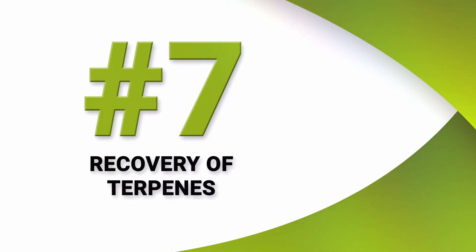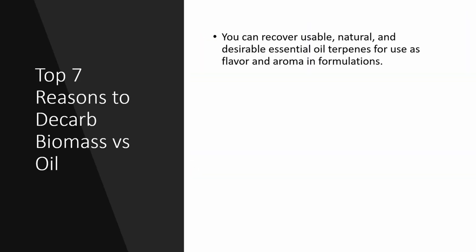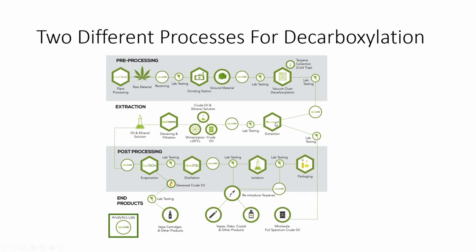Number seven: you can recover usable, natural, and desirable essential oil terpenes for use in flavor and aroma formulations. You're recovering them and reusing them in formulations. When you do an extraction, all your terpenes are in your extract, and after more post-processing they're still in the extract but they're not recoverable as a separate stream.